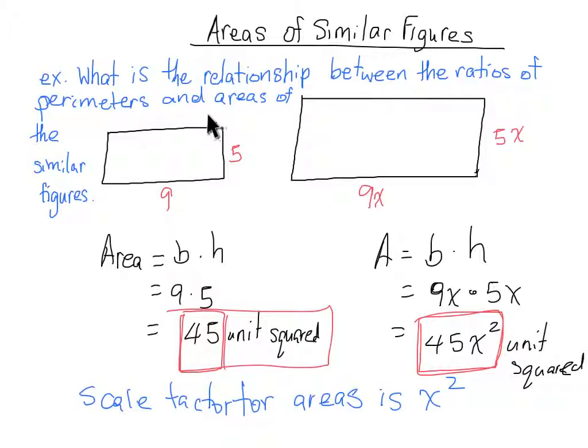So what is the relationship between the perimeter and the area? Well, the perimeter scale factor was x, the area scale factor is x squared. So, the area's ratio is always the square of the dimension's ratio.